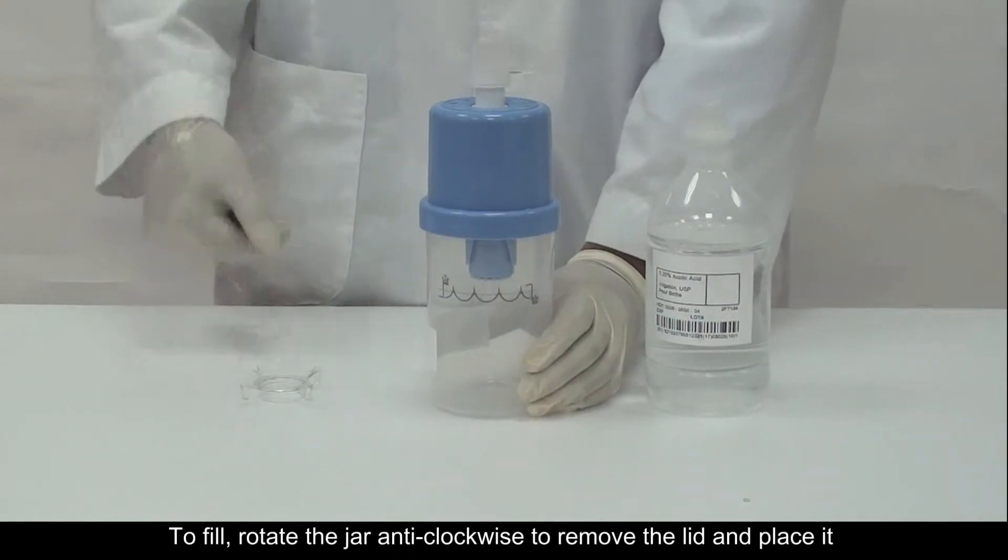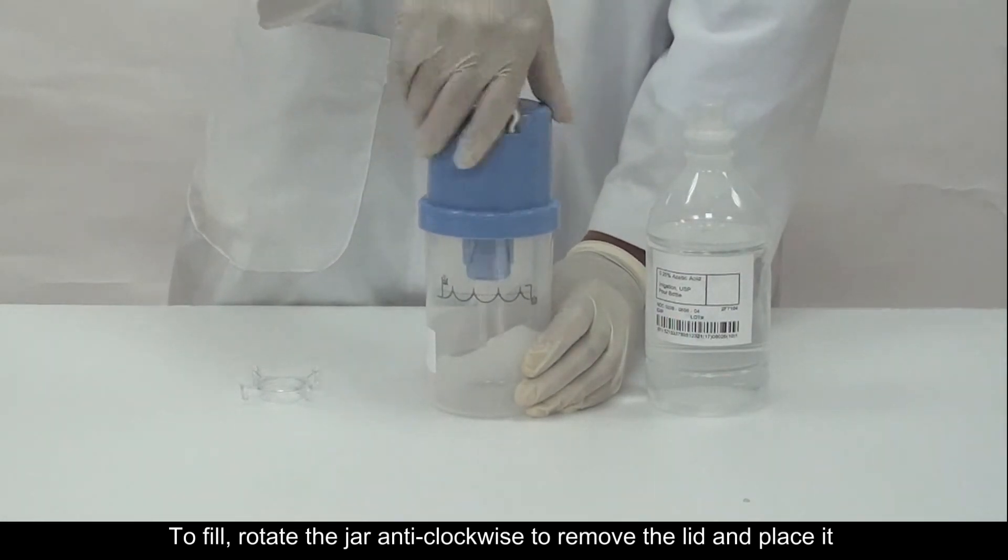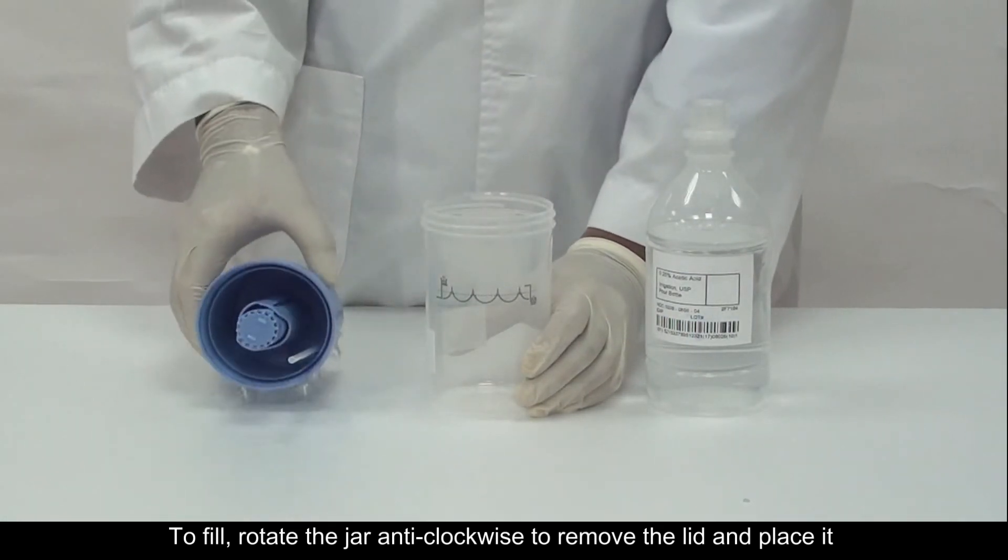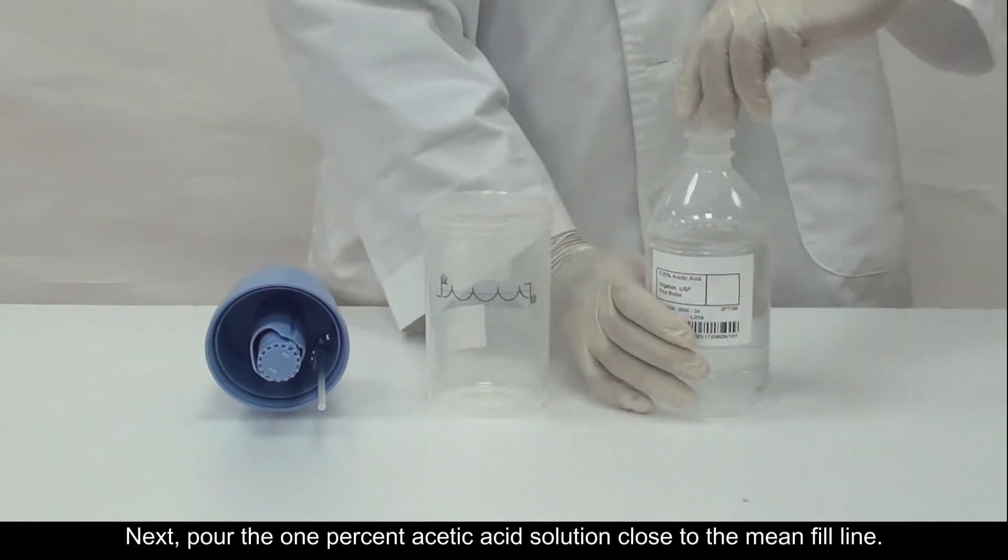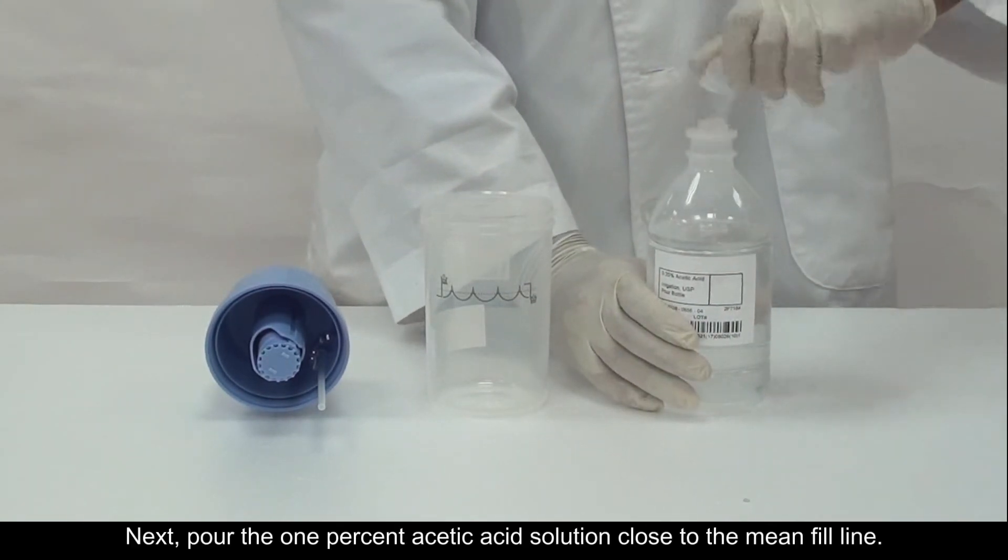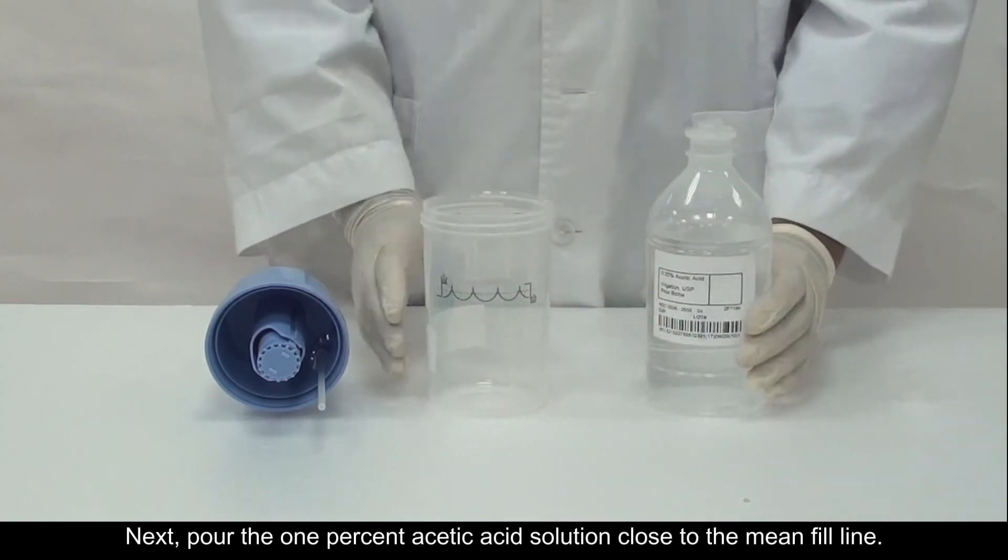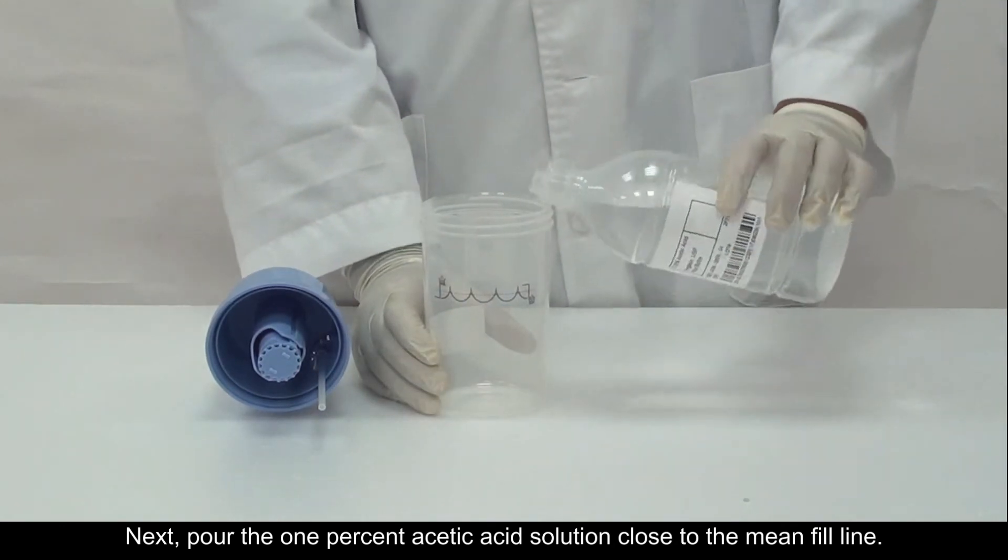To fill, rotate the jar anti-clockwise to remove the lid and place it on a clean surface to reduce contamination. Next, pour the one percent acetic acid solution close to the mean fill line.